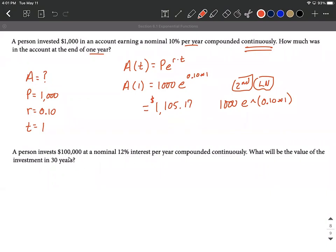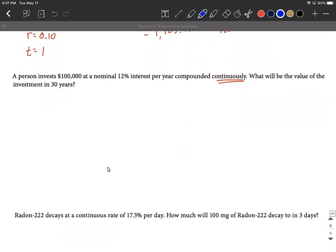Let's say a person invests $100,000 at a nominal 12% interest per year compounded continuously. So again, keyword pointing us towards the continuously compounded interest formula and away from the compound interest formula. What will the value of the investment be in 30 years? So again, on this, let's just kind of off to the side, list out any of these variables, A, P, R, T.